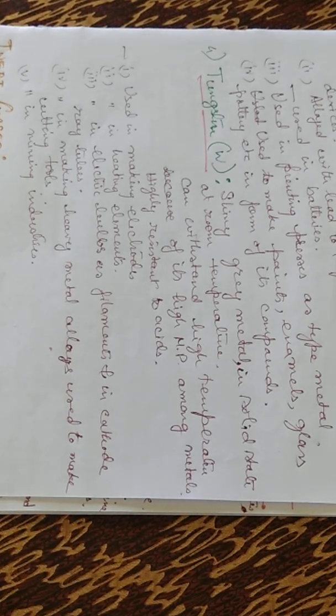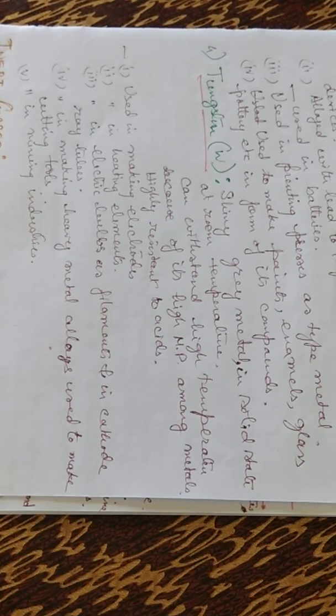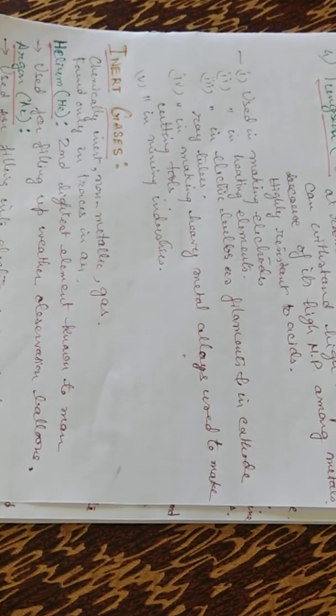And that's why they are used in making electrodes and heating elements in electric bulbs as filaments, in cathode ray tubes, in making heavy metal alloys used to make cutting tools in mining industries.